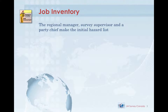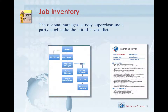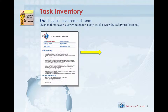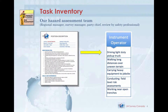The regional manager, a survey supervisor, and a party chief make the initial hazard list using the company organizational chart and job descriptions for each position. For the purpose of this training, we'll look at just one of those job positions: the instrument operator. Our hazard assessment team builds a list of the tasks the instrument operator will perform as part of the job, starting with the job description from Human Resources and adding any tasks that might have been left off. When they're done with the initial task list, they send the new information back to HR for updates to make sure that our pre-hire and fit-for-duty testing and recruiting processes attract team members who are a good fit for the job.